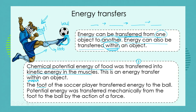Then the foot of the soccer player — our second transfer — transferred energy to the ball. Potential energy was transferred in a mechanical way from the foot to the ball by the action of the force, and the force came from the foot. We've got object one transferring energy to object two, then to object three. If that ball hit somebody on the head, the energy would be transferred to object four.